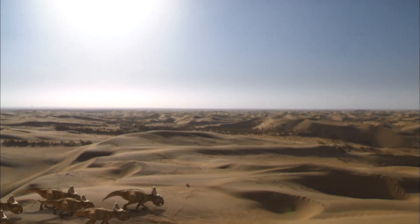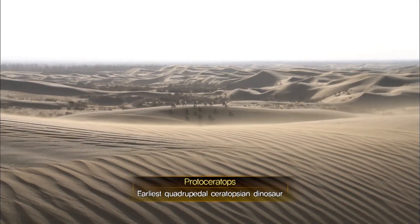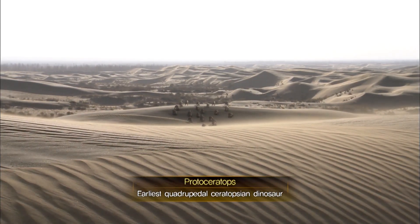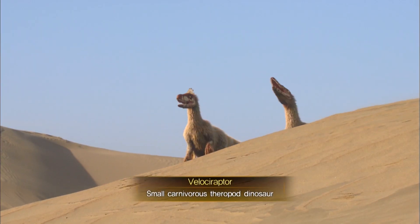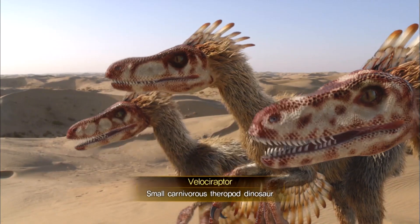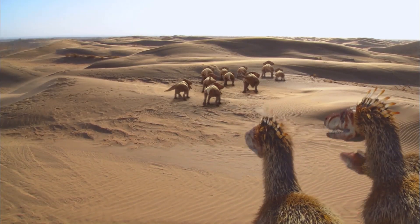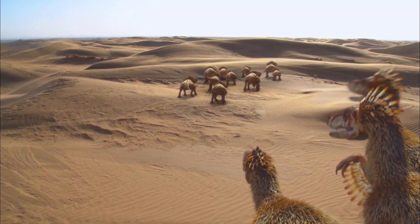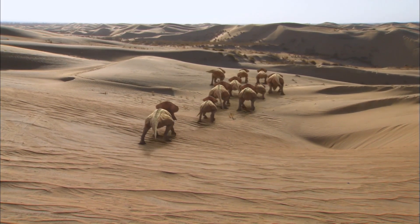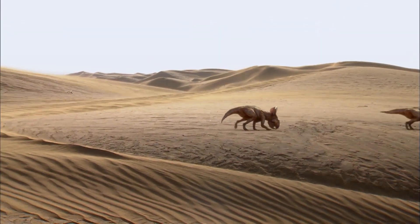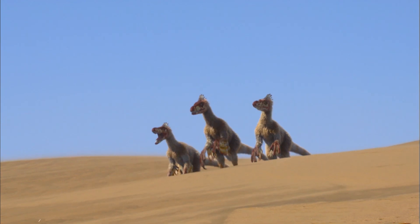Long droughts took a toll on Protoceratops because it only ate plants. The clever Velociraptor used hunting strategies. The raptors targeted a Protoceratops that could not keep up with the group.